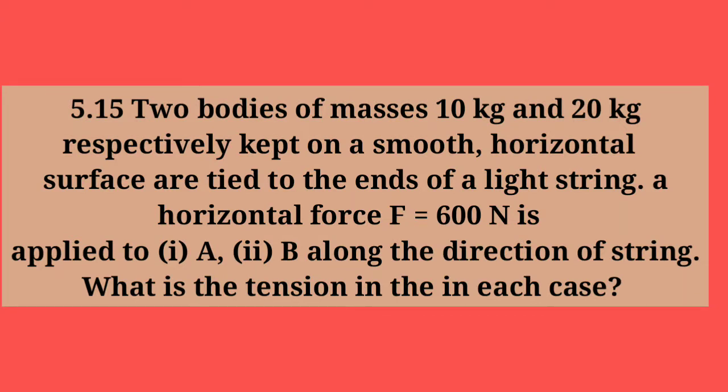Example 15: Two bodies of masses 10 kg and 20 kg respectively, kept on a smooth horizontal surface, are tied to the ends of a light string. A horizontal force F = 600 Newton is applied to first one A and second one B along the direction of the string. So what is the tension in the string in each case — that we have to find out.